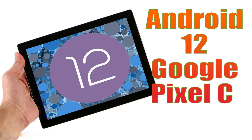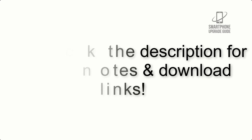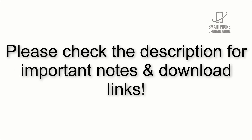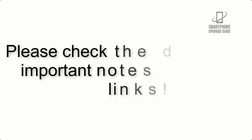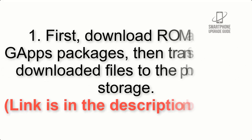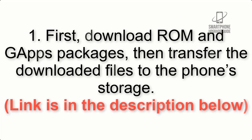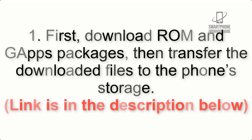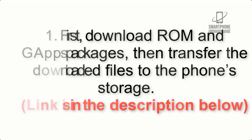Install Android 12 on Google Pixel C via an AOSP ROM. Please check the description for important notes and all the download links. First, download the ROM and GApps packages, then transfer the downloaded files to the phone storage. The link is in the description below.